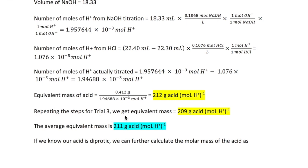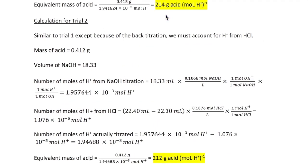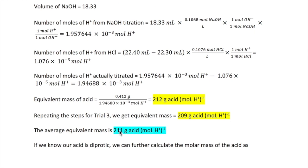Lastly, if you repeat this calculation for trial three, you're going to get 209 grams of acid per mole of H+. Now, if you average all those three numbers, you're going to get 211 grams of acid per mole of H+.